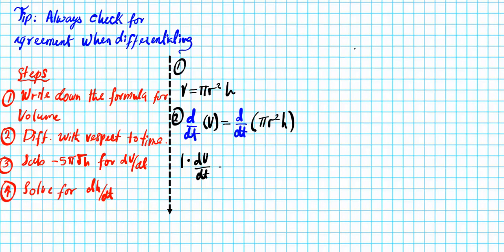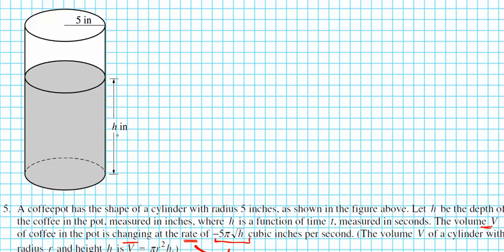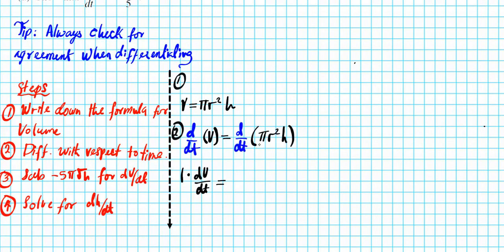Now let's take a look at the right side. We have two variables here: r² and h. You might think we have to use a product rule, but take a look at what we're dealing with — a cylinder. The height is clearly changing. What's happening with the radius? The radius is not changing; it's constantly 5. So you can factor out the constant πr², and then you just differentiate what changes — which is h with respect to time.